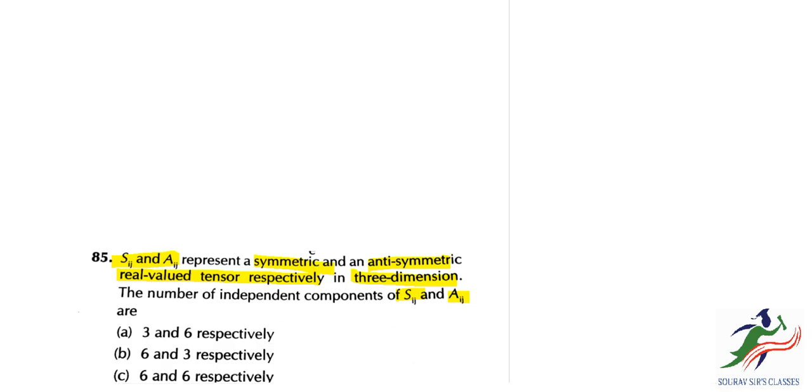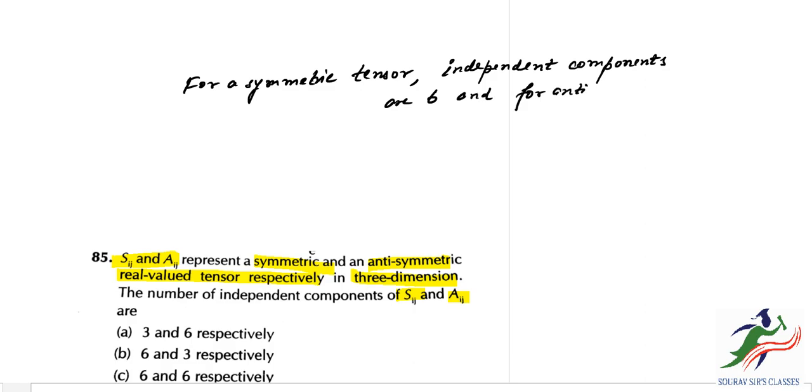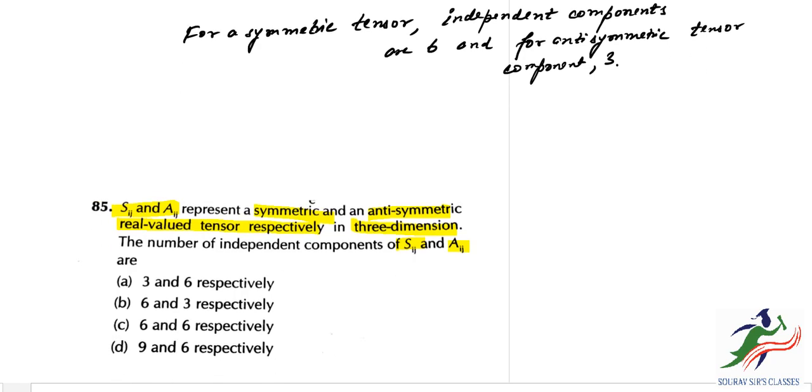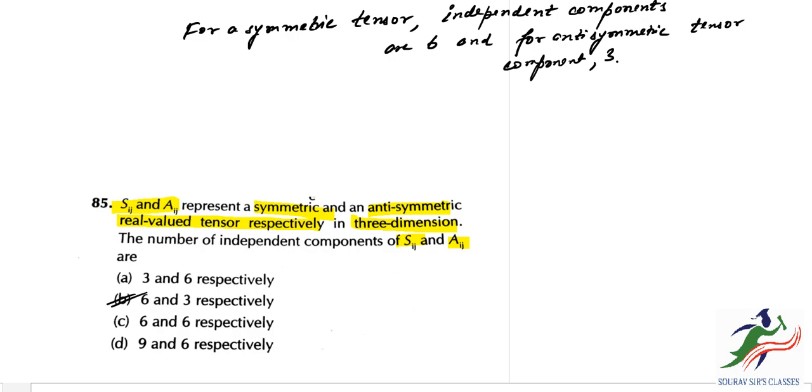The number of independent components of S_ij and A_ij are: for symmetric tensor, components are 6, and for antisymmetric tensor, the number is basically 3. So we have the answer as B, that is 6 and 3 respectively.